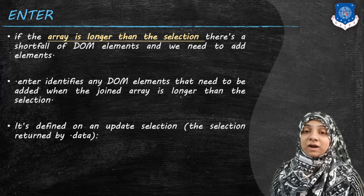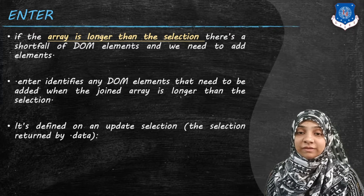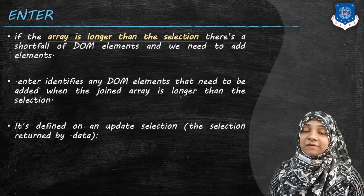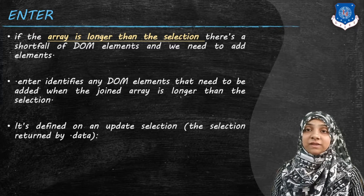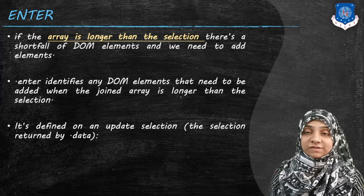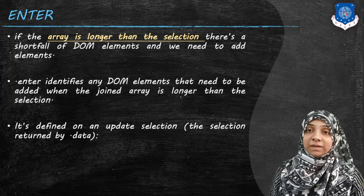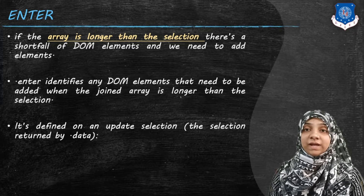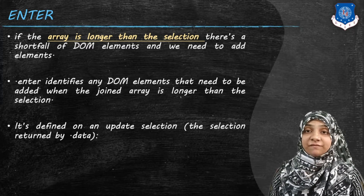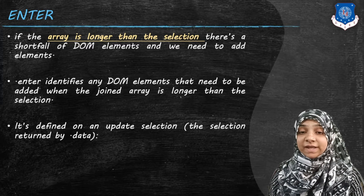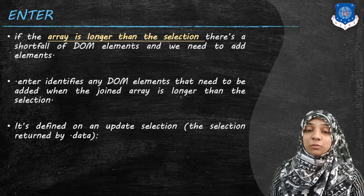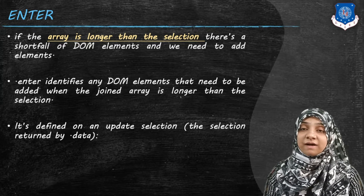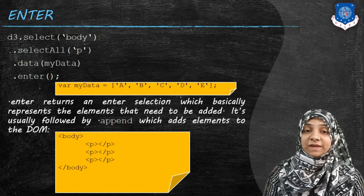The enter method is used when array elements are more compared to selected DOM elements. Say for example, in an array we have ten elements and in an HTML page we have two to three circles, and we are binding the array element data with those circles. In this case we do not have enough circle elements to represent each data individually, so we make use of the enter method after the data method, which identifies how many or which DOM elements need to be added when the array is joined with a DOM selection.